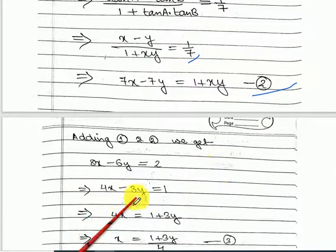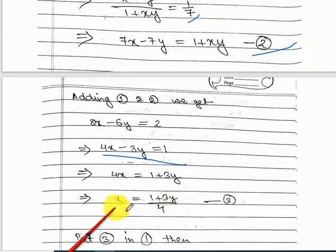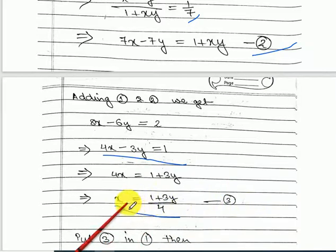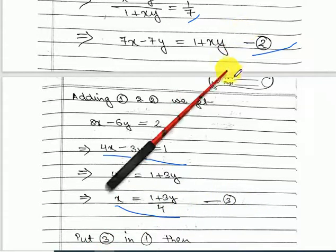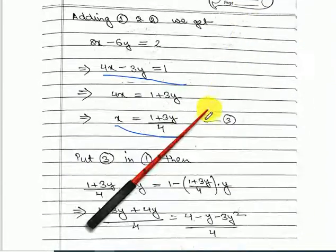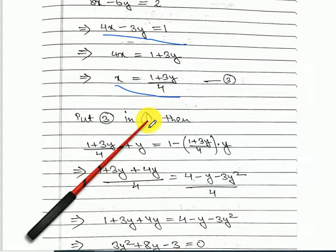Now add equation 1 and equation 2. By adding we get 4x minus 3y minus 3y equal to 1. Therefore we get x equal to (1 plus 3y) upon 4. Put this as equation 3.